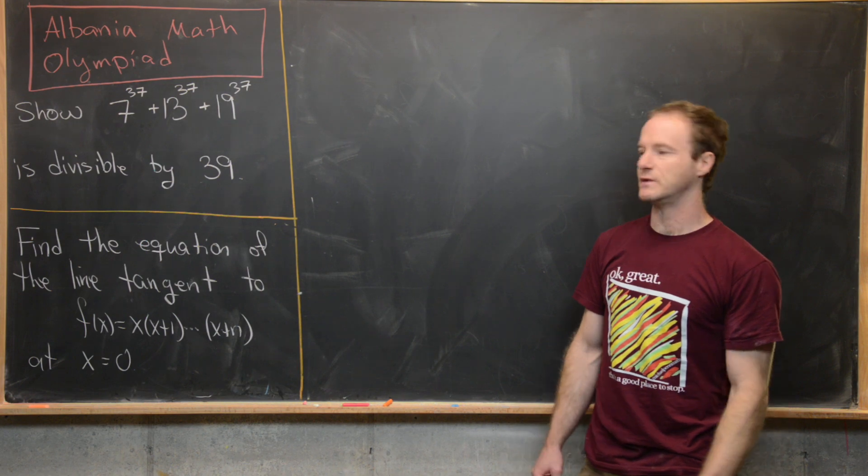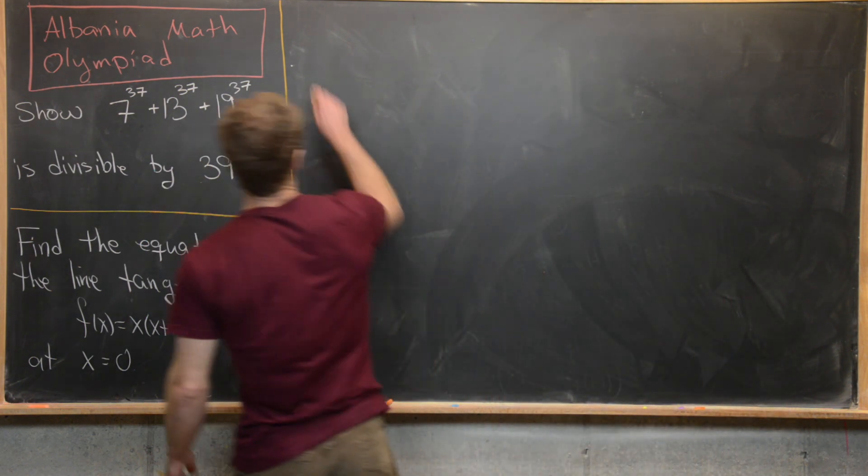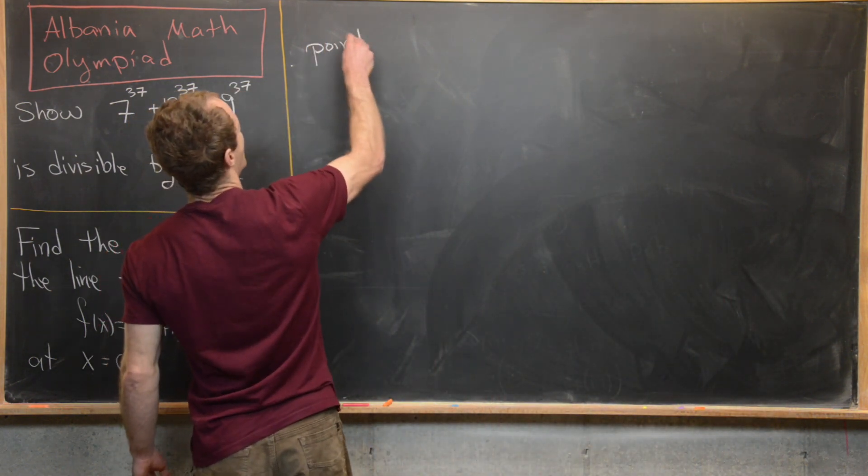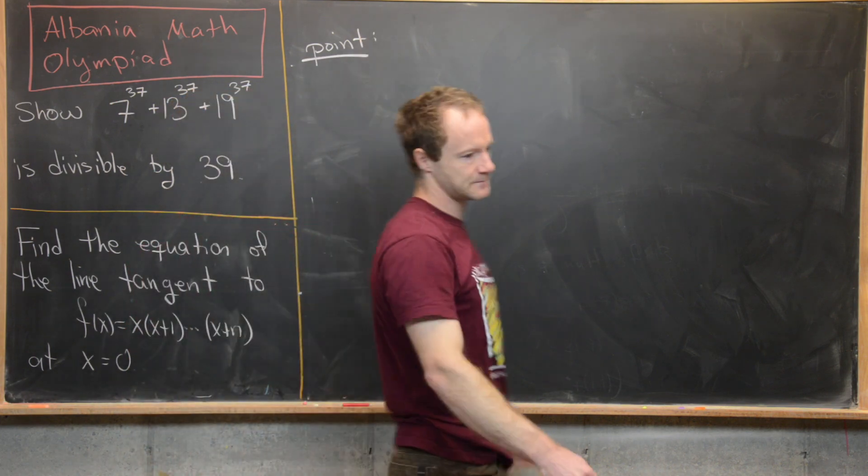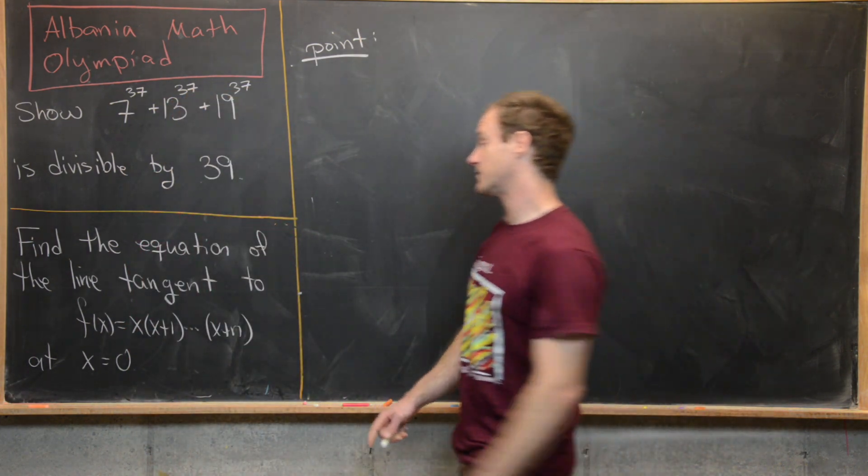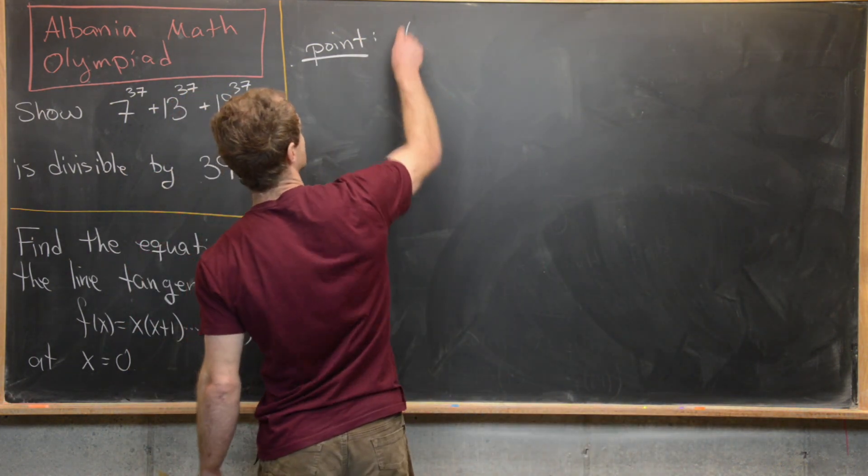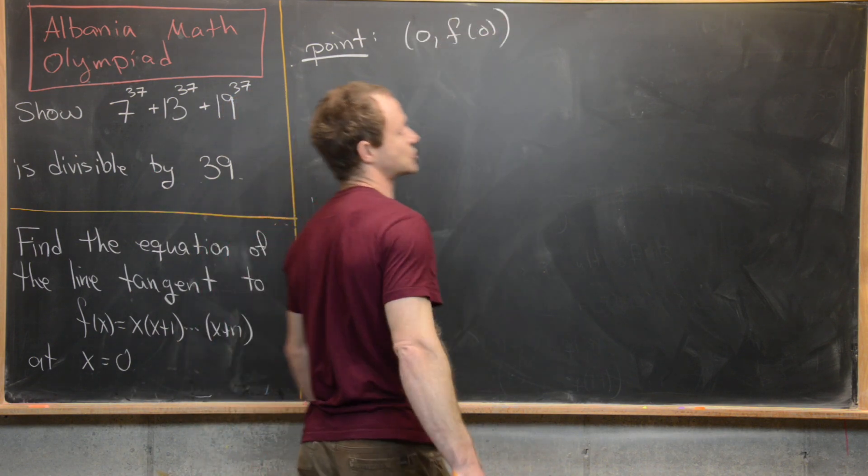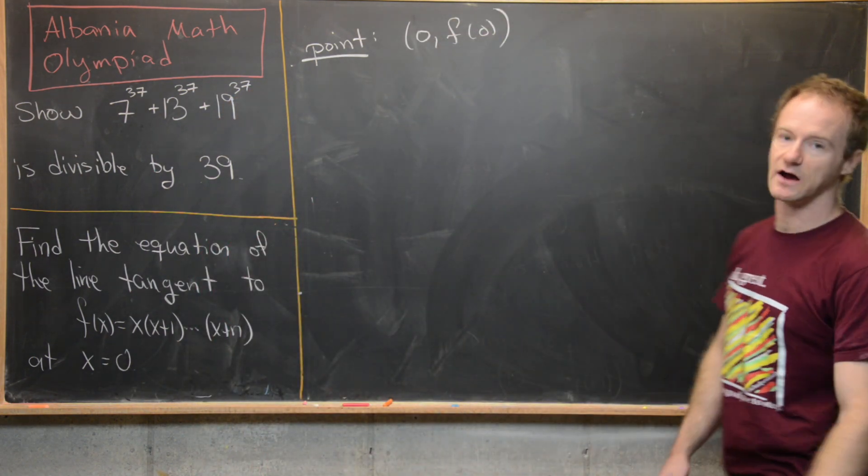Whenever we want to find the equation of a line, we need those two things. So let's go ahead and find the point first. But the point here is fairly simple. Notice we're given the x value. And then the y value will be the function evaluated at that x value.